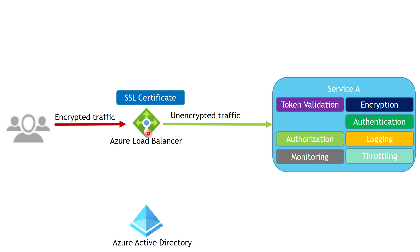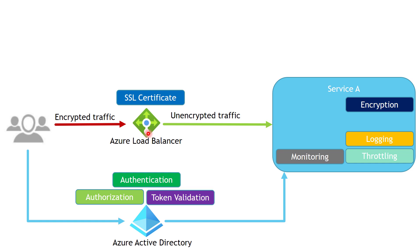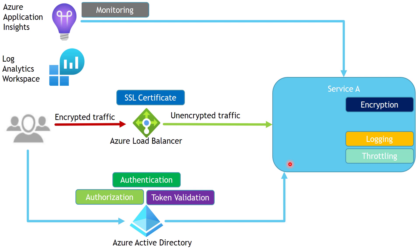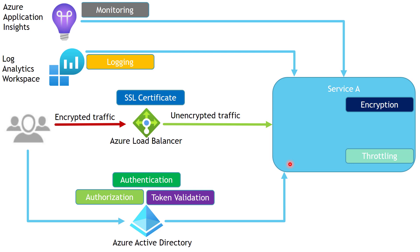By adding Azure Active Directory, we can offload authentication, authorization, and token validation — we no longer need to implement these features in Service A as long as we can leverage Azure Active Directory. Azure Application Insights will provide a lot of data about our service's performance, exceptions, errors, and availability, so we can offload the monitoring feature from Service A to Azure Application Insights. Similarly, we can use a Log Analytics workspace to provide different logs for our services and offload the logging feature from Service A.